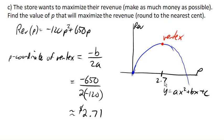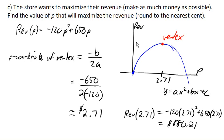If we wanted to know what that maximum revenue was, we could go ahead and plug $2.71 back into our equation. So negative 120 times 2.71 squared plus 650 times 2.71, and we come up with a maximum revenue of about $880.21.